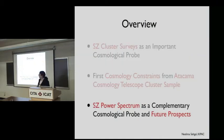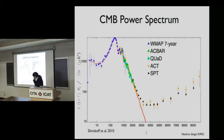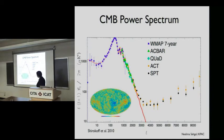Let me tie that into the interesting things going on with the power spectrum. Here's the CMB power spectrum we all know well. The key contribution of ACT and SPT is measuring the high-L regime. ACT is measuring from L=500 all the way to L=10,000. Here's the plot from the ACT power spectrum paper: the solid green is the power spectrum at 148 GHz, then the cross-power between 148 and 218 GHz, and the power at 218 GHz.